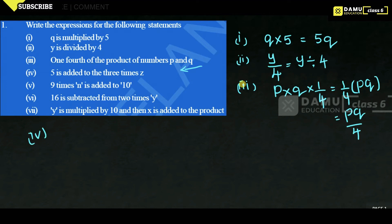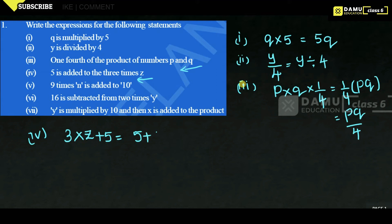The fourth statement is: 5 is added to 3 times of z. Times means multiplication, so 3 times of z is 3z. Therefore, 5 is added to 3z gives 5 plus 3z.